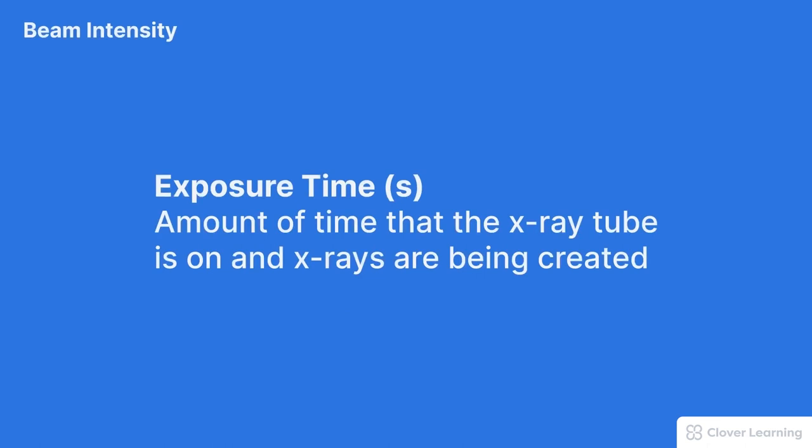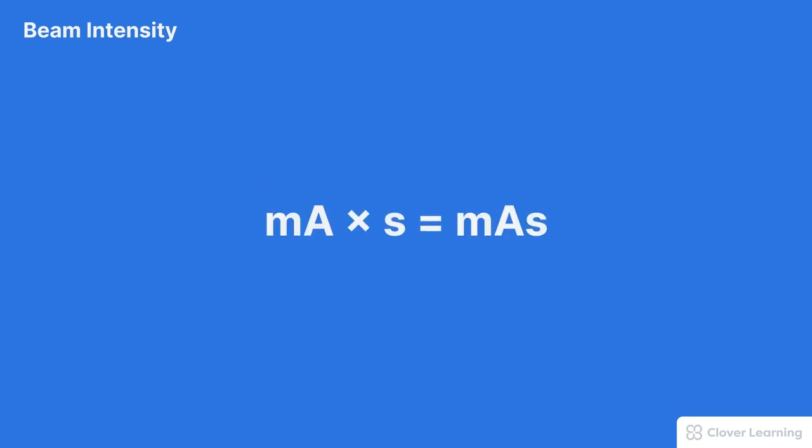The MA has important relationships with other exposure factors, especially exposure time. The exposure time refers to the amount of time that the x-ray tube is on and x-rays are being created. The product of the MA and exposure time in seconds is called the mAs. The mAs is an important factor influencing the intensity, that's the quantity, of the x-ray beam. Usually an operator sets the mAs rather than setting the MA and time separately.